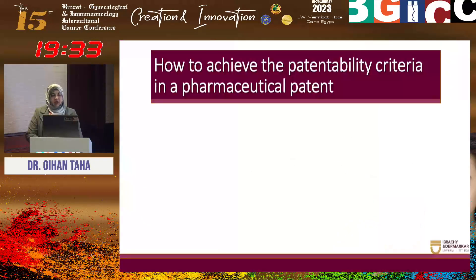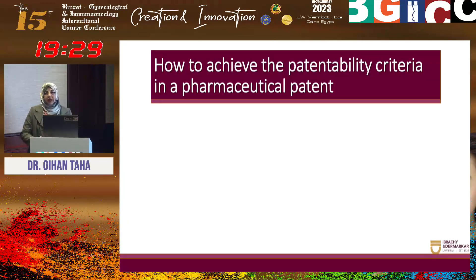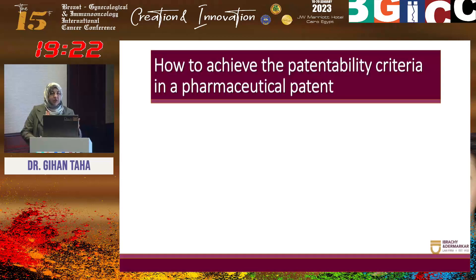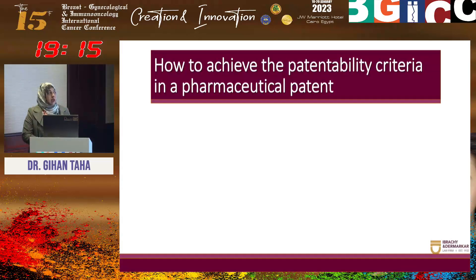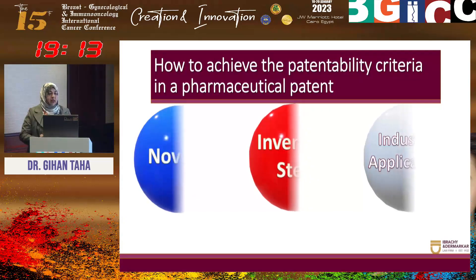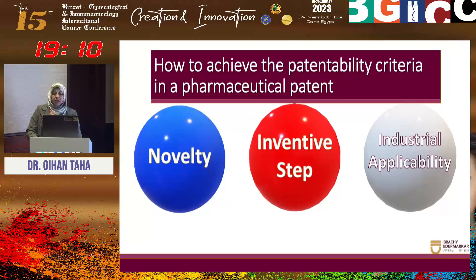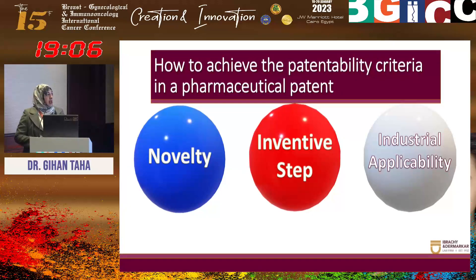There are three main criteria for a patent to be accepted — for an invention or research to be patentable. If you are doing research and you are interested in having a patent to protect the invention of the structure or whatever the dosage form, you must satisfy three criteria: novelty, inventive step, and industrial application. I will talk briefly about how to fulfill these criteria in a pharmaceutical patent.